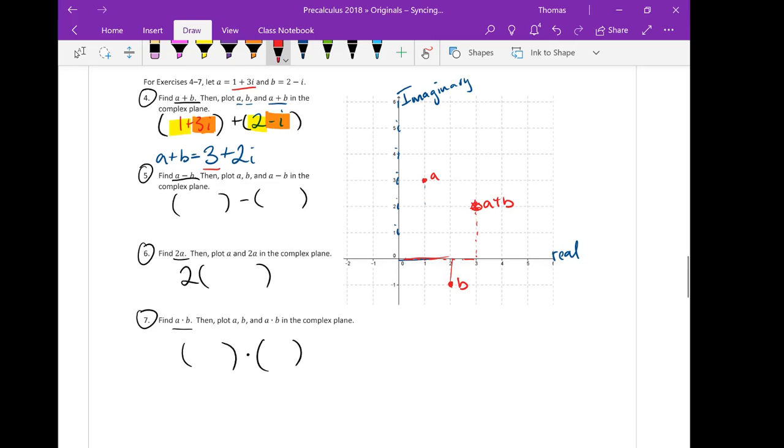Here we go again for question 5. a minus b: 1 plus 3i, b is 2 minus i. Subtracting—again, I like to distribute this negative throughout, so it'll be minus 2 plus i. And 1 minus 2 is negative 1, and 3i plus i is plus 4i. So that would be a minus b.